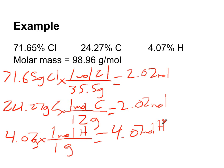Now at this step, we divide these numbers, the number of moles that we have, by the smallest of them. So we're going to divide by 2.02.